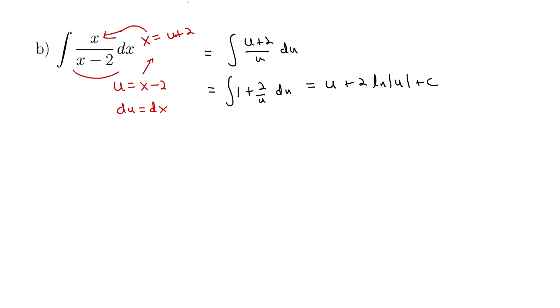But u is x minus 2, so back in we go, do our back substitution. We have x minus 2 plus 2 natural log x minus 2 plus c. And believe it or not, this is not actually the best possible answer. Can you spot why? It's because this minus 2 business is a constant itself, so that can be folded in with this plus c constant.